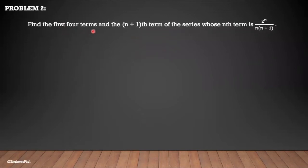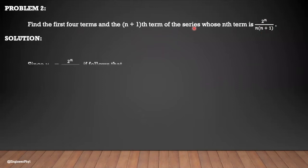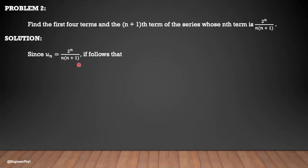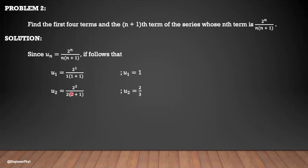Example number 2: Find the first four terms and the (n+1)th term of the series whose nth term is 2^n / [n(n+1)]. We write u_n = 2^n / [n(n+1)]. At n = 1, the first term is 2¹/(1·2) = 1. For n = 2, the second term is 2²/(2·3) = 4/6 = 2/3.